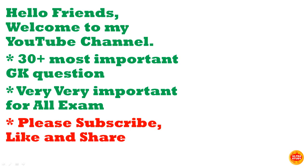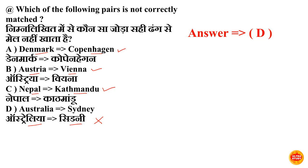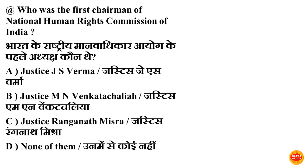Hello friends, welcome to my YouTube channel. This video has 30 plus most important GK questions, very very important for exams. First question: which of the following pairs is not correctly matched? Denmark ka capital hai Copenhagen, correct. Austria ka capital hai Vienna, correct. Nepal ka capital hai Kathmandu, correct. Australia ka capital Sydney nahi hai. Correct option is option D — Australia ki rajdhani hai Canberra.